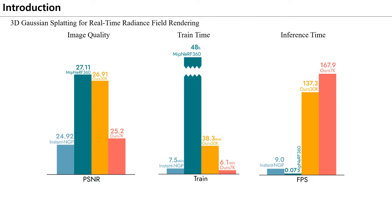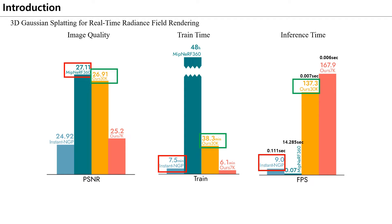But ZipNeRF also takes about an hour on 8 V100 GPUs. Instant NGP has a very fast train speed of only 7 minutes, but in comparison, the quality is not good. From a real-time service perspective, the inference speed seems fast at 100ms, but it is measured on the A6000 GPU. When measured with a low-spec CPU, it exceeds 1 second and cannot be serviced.